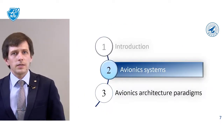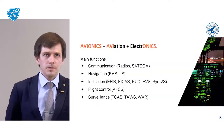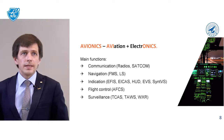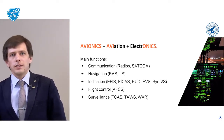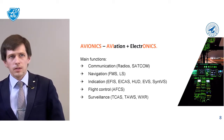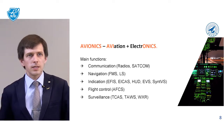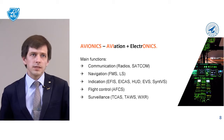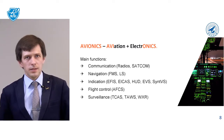Now let's speak step by step about every topic of our examination. Avionics – what is it? It is Aviation and Electronics, so every electronic unit inside the aircraft. The main functions of Avionics are: communications, for example radio and satellite communication; navigation, for example landing system and flight management system; indication; flight control; and surveillance systems.